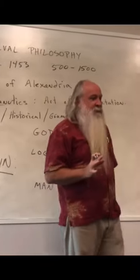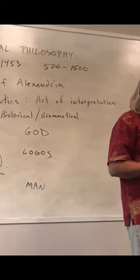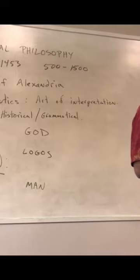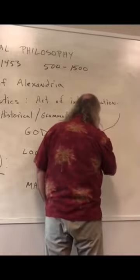With allegorical interpretation, though, it treats the scriptures kind of like an onion. So the scriptures become either like an onion or an ogre or a parfait because they have lots and lots of layers.